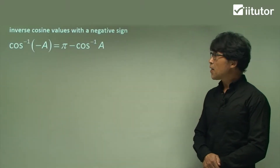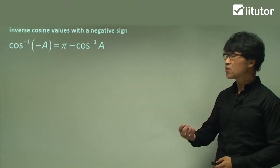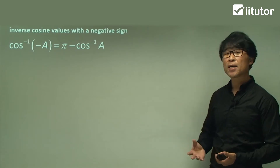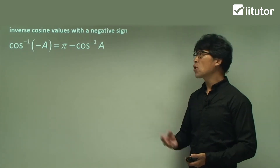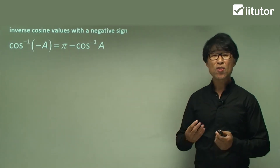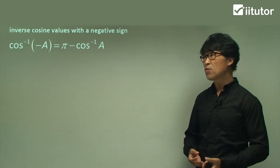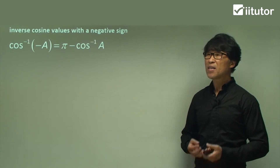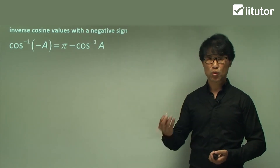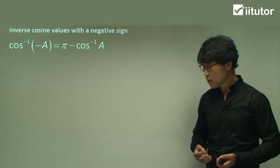Hi everyone. We're going to talk about inverse functions. Particularly for today, we're going to talk about inverse cosine with negative values. The value is not the angle, but the value is the output trigonometric ratio.